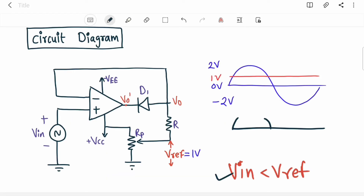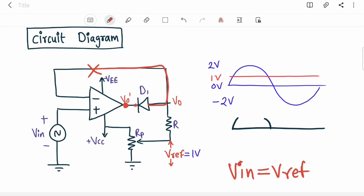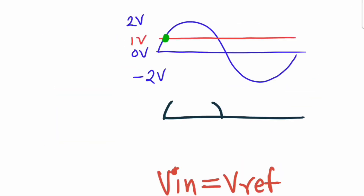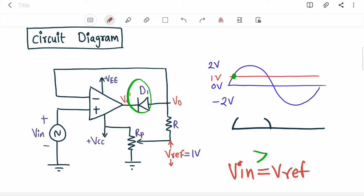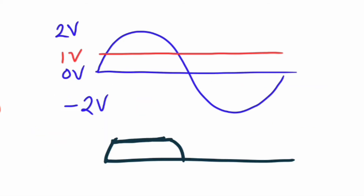When V_in reaches V_ref (1V), there is no longer a sufficiently negative voltage at the N-terminal of the diode, so the diode becomes reverse biased and acts as an open circuit. The feedback loop is broken and the op-amp returns to open loop. Now the output has only one path — through V_ref — so the output becomes constant at 1V. Whenever V_in exceeds V_ref, the output stays clipped at V_ref.